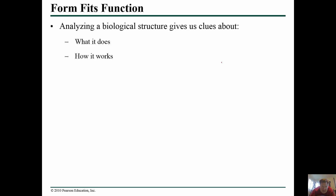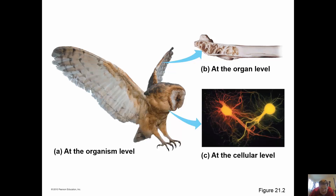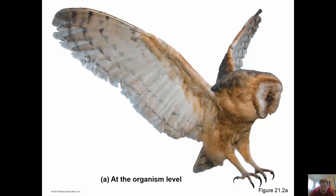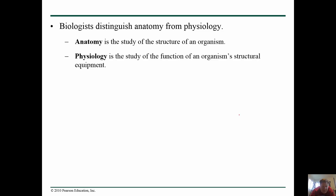Another concept in biology is that form fits function — analyzing biological structures gives us clues about what they do and how they work. Things kind of look like what they do. Here we see by these big wings that this organism probably flies. If it flies, it needs to reduce its weight, so these bones have a structure that allows them to be strong yet really light. At a cellular level, these are neurons that interact with one another by amassing many dendrites.